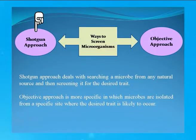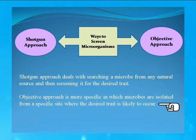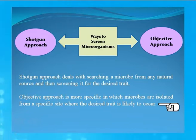Screening can be done in two ways: by shotgun approach or by objective approach. Shotgun approach deals with searching a microbe from any natural source and then screening it for the desired trait. In the objective approach, microbes are isolated from a specific site where the desired trait is likely to occur. So the objective approach is more appropriate and specific than the shotgun approach.